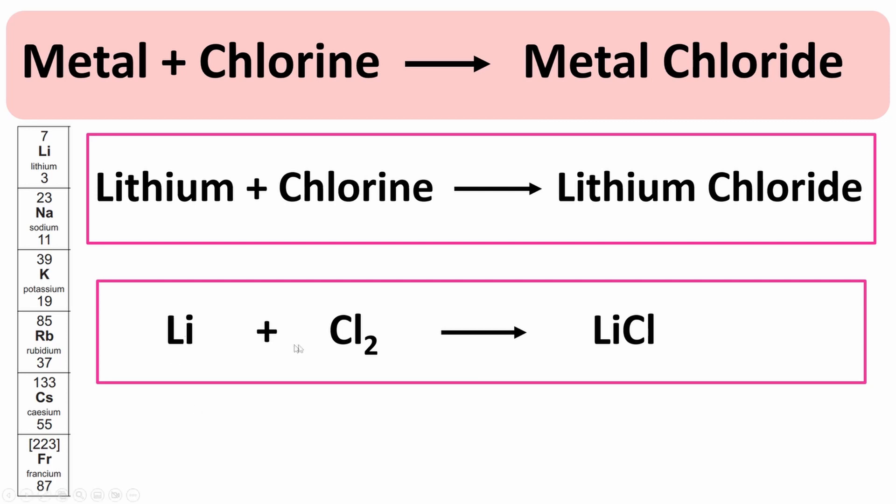For lithium, we have Li, chlorine Cl₂, and lithium chloride LiCl. But you can see here, we only have one chlorine atom there, and we have two chlorine atoms bonded in a single molecule here. So the chlorines are not balanced.